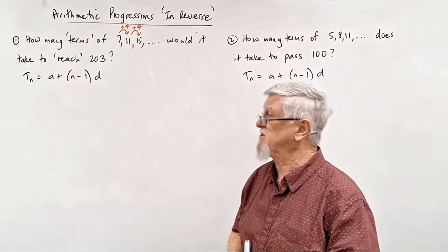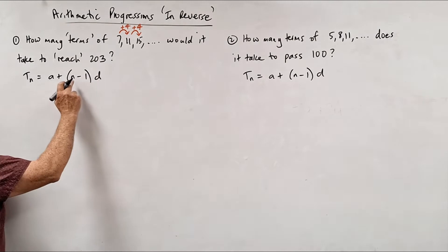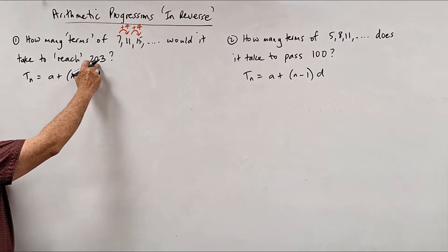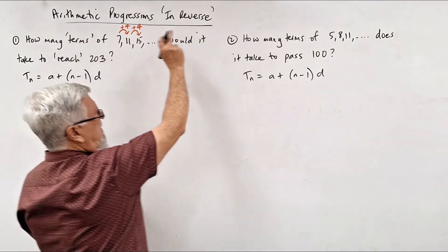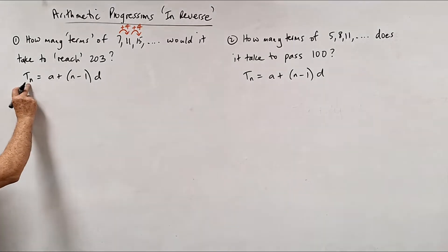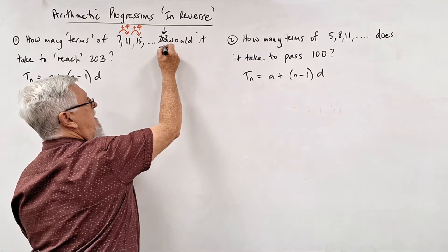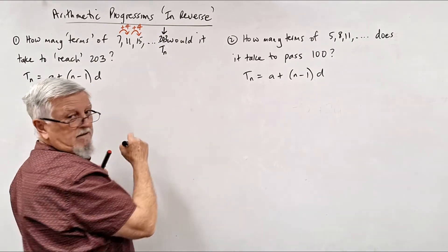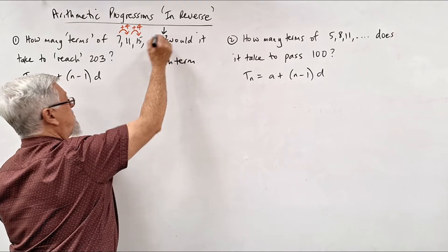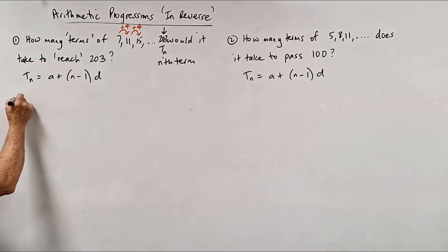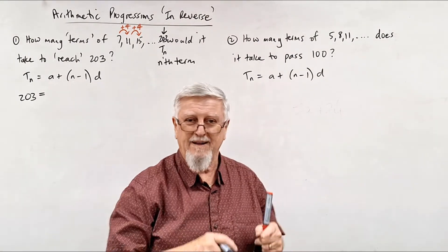I can think of students who would just get mixed up and put 203 into the n position. It's not saying 203 is the term number — we're not adding 4 a total of 203 times. What it's saying is that the term value itself, the number we're going to reach, is 203. So T_n equals 203, not n equals 203.